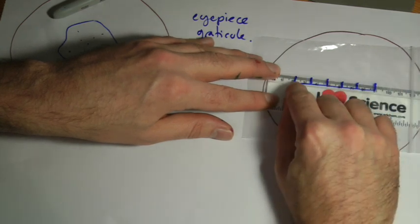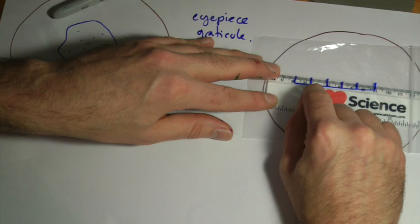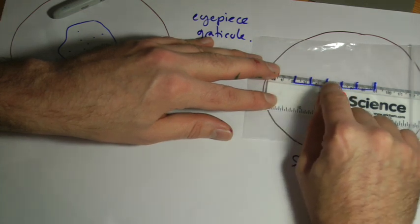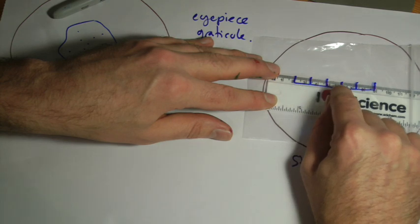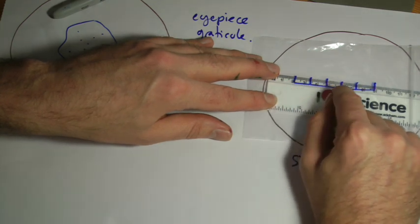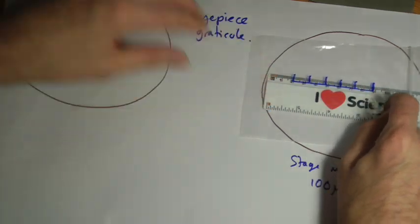So for example, that is now lined up there. The next one doesn't really line up with a big number. The next one doesn't quite. Oh, but that one does. So one, two, three divisions on the graticule equal 10, 20, 30, 40 divisions on this ruler. Now, if this was in micrometers, that's like saying three divisions on here, one, two, three, equal 40 micrometers.